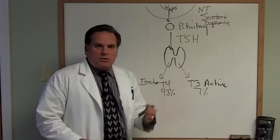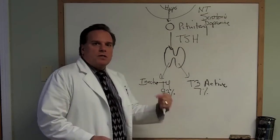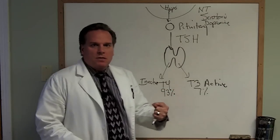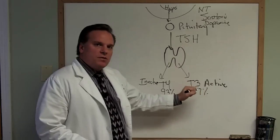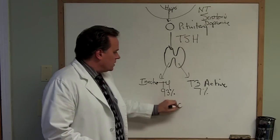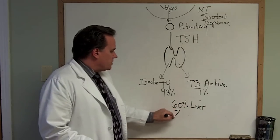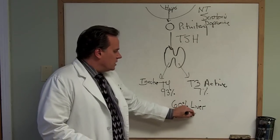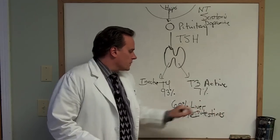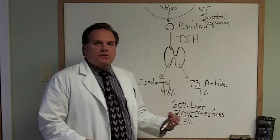Because T4 is inactive, that 93% needs to be carried around through the body and activated by enzymes that allow it to become T3. The places where T4 goes to be activated: 60% is activated in the liver, 20% is activated in your intestines and digestive system, and the other 20% is activated in all other tissues of the body.